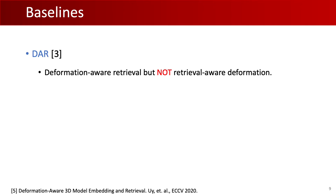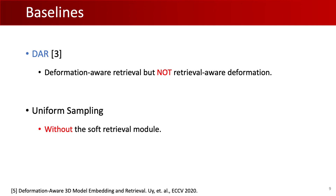We compare our approach with several baselines, such as DAR, which uses deformation-aware retrieval but not retrieval-aware deformation, and uniform sampling, which is the same as our method but without the soft retrieval module. Results qualitatively and quantitatively show that our joint approach outperforms all the baselines.